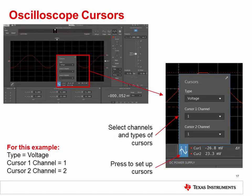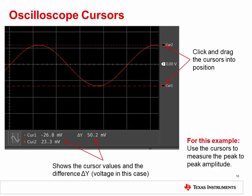Cursors may be used to measure oscilloscope signals. Click the cursor icon located above the power supply settings to open the cursor menu. Select voltage type, then set cursor 1 channel to 1 and cursor 2 channel to 1. The cursor's location may be adjusted to make a measurement — click and drag the cursor indicators into position at the top and bottom of the sinusoidal waveform. The voltage level at each cursor, as well as the delta Y (in this case the voltage), will be displayed next to the cursor icon. Use the cursors to measure the signal's peak-to-peak amplitude; you should see a result of 50 millivolts peak-to-peak, the same amplitude as the function generator.